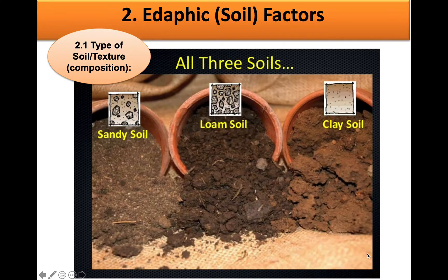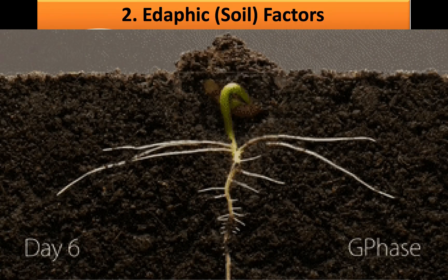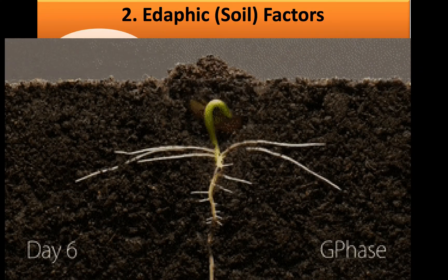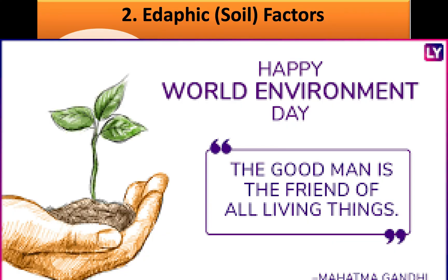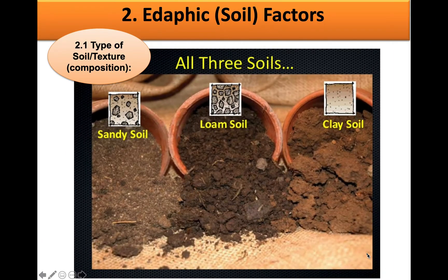Welcome back learners. In today's video we will be discussing the second abiotic component in our environment, and that is the edaphic factors. When we speak about edaphic factors we are referring to all those factors that have something to do with soil characteristics. Soil is the basis of our food production as we need fertile soil in order to grow our crops, and it's also a very important natural resource that we should be protecting and conserving. We need to understand and investigate a number of soil characteristics in order to understand the role and influence of soil in our ecosystem.